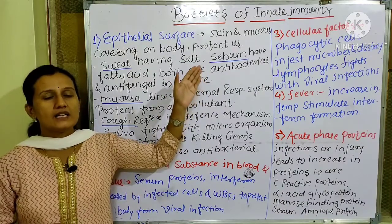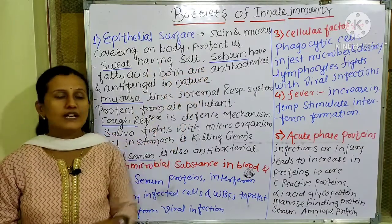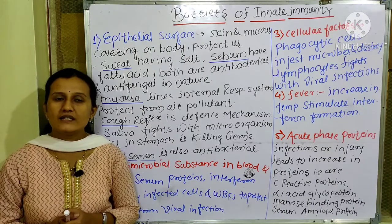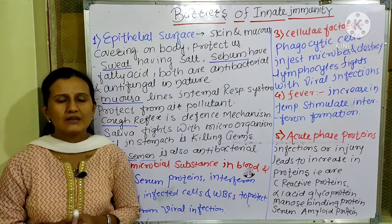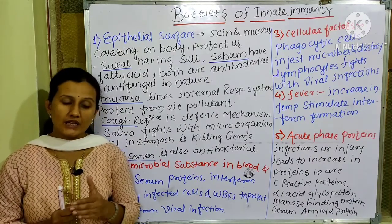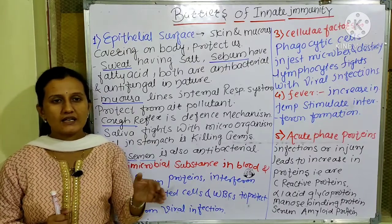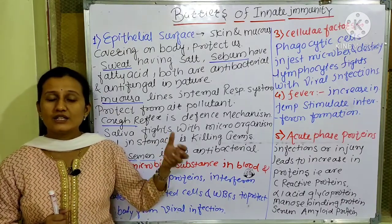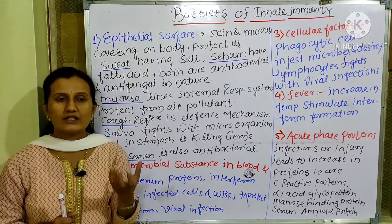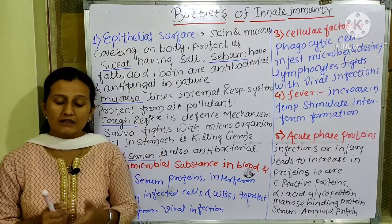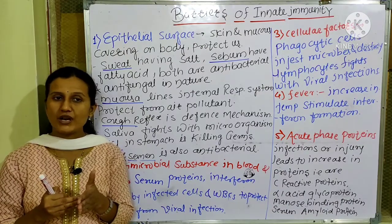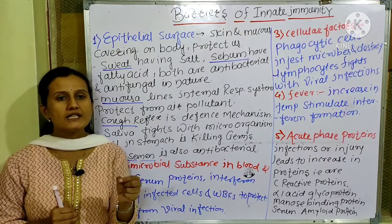The next factor is body temperature. Our body temperature is always around 36.6 to 37 degrees Celsius, while room temperature is about 27 degrees Celsius. We are warm-blooded animals, therefore our body temperature does not change with the environment.